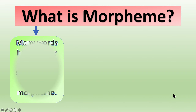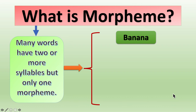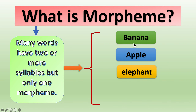Many words have two or more syllables but only one morpheme. For example, 'banana' has more than one syllable but it is one morpheme — we cannot further divide it into two parts. Similarly, 'apple' has more than one syllable but is a single morpheme, and likewise 'elephant' has many syllables but is one morpheme.